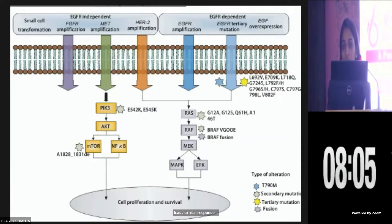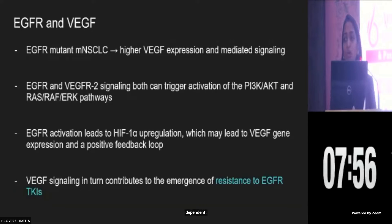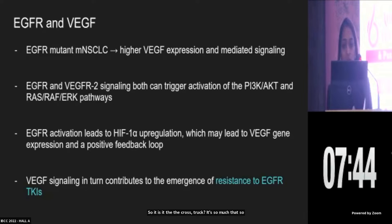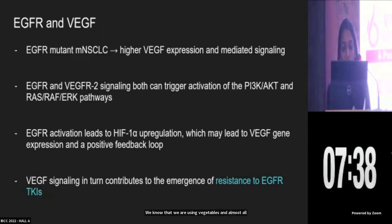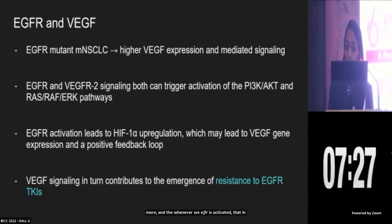Once on an EGFR TKI, the patient develops resistance by various mechanisms — either EGFR-dependent or EGFR-independent. Apart from this, there is a lot of crosstalk happening between the EGFR and the VEGF pathway. VEGF obviously plays a role in all cancers, but particularly in EGFR-mutant metastatic NSCLC, VEGF expression is found to be higher. And whenever EGFR is activated, that in turn leads to VEGF activation, and when you block EGFR, there is indirect VEGF signaling which is activated.